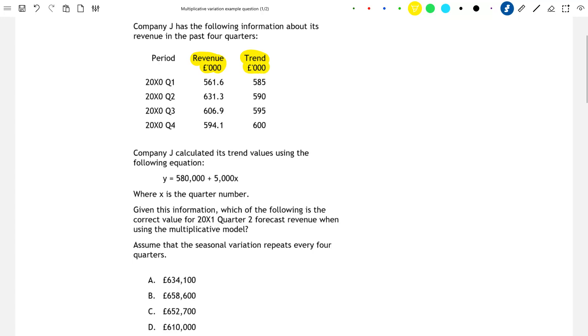Company J has calculated its trend values using the following equation: Y equals 580,000 plus 5,000X where X is the quarter number, 1 in quarter 1, 2 in quarter 2 and so on, and Y is the trend value which is revenue in our case.